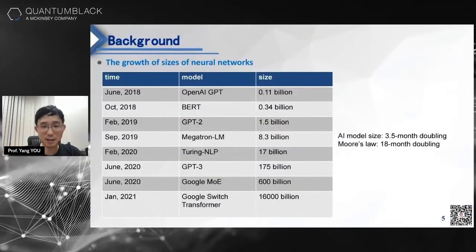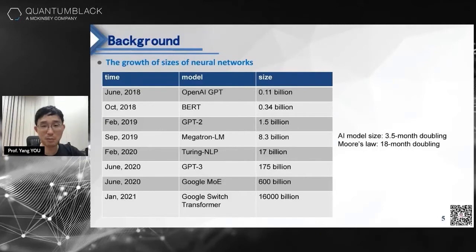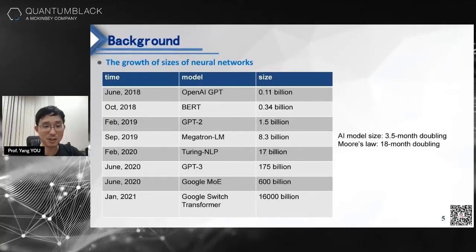In the last three years, supercomputers are becoming more powerful because of huge AI models. In 2018, Google proposed BERT and used it for its search engine. Back then, BERT was considered huge at roughly 300 million parameters. Now, the Google Switch Transformers used in Google Translate have 1.6 trillion parameters — it's very crazy.